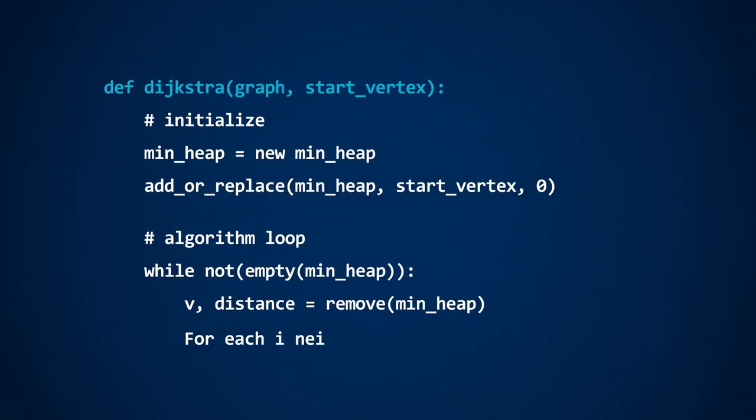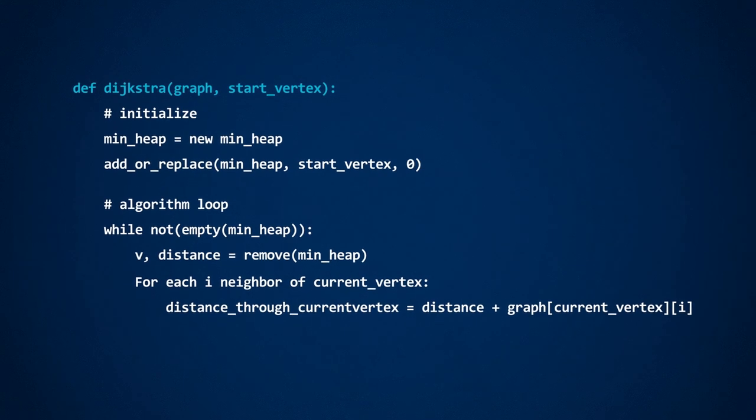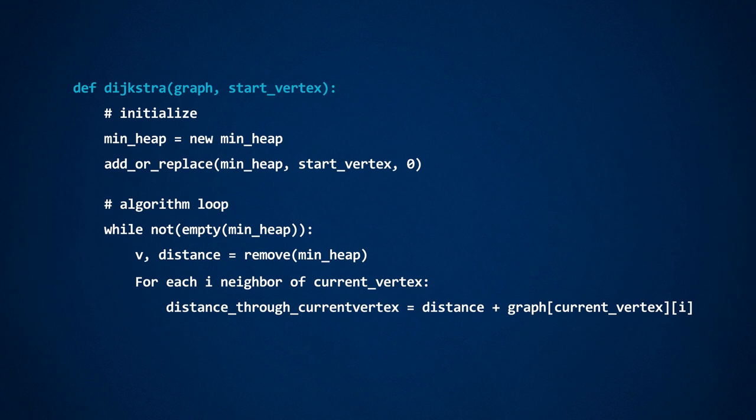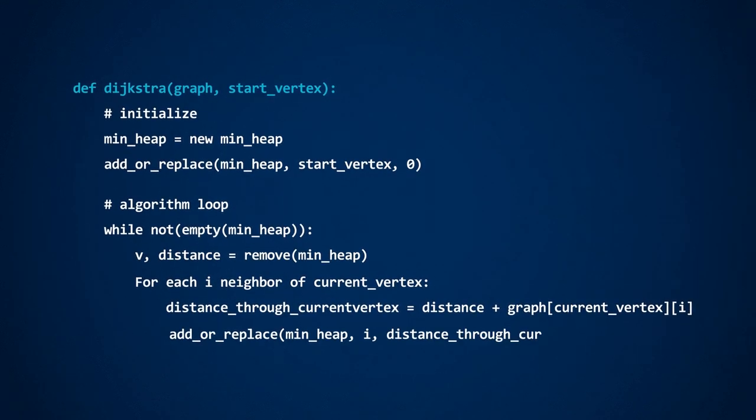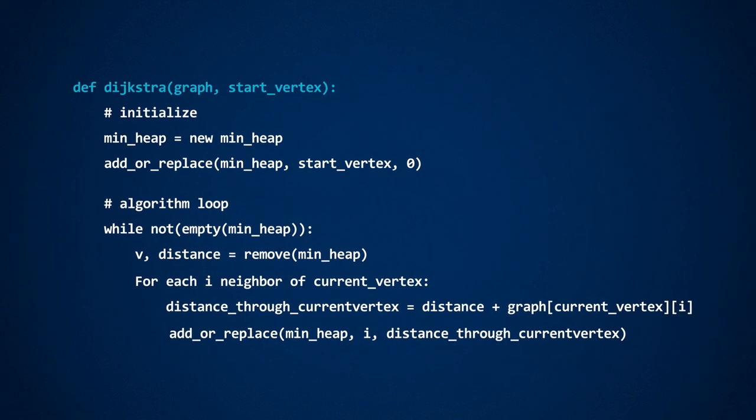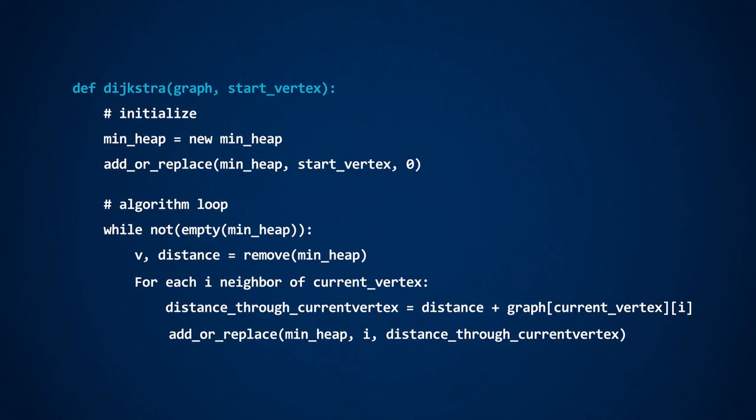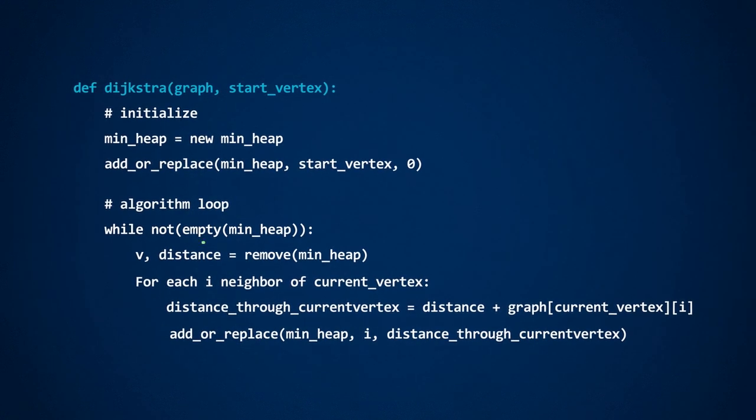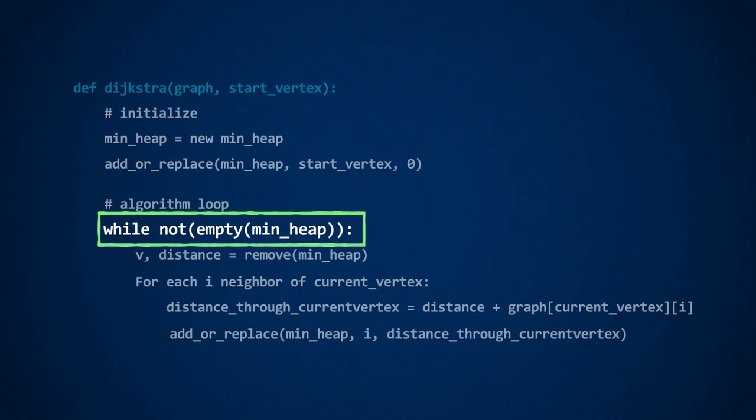Next, we examine each neighbor of the vertex that we've just removed from the min heap. Distances are updated by adding the stored distance and the edge weight corresponding to this neighbor. Then, we add or replace the entry corresponding to this neighbor in the min heap, which will automatically update the distance to the minimum one, if needed. This process continues until the min heap is empty, corresponding to the fact that all vertices have been visited.